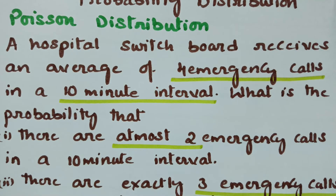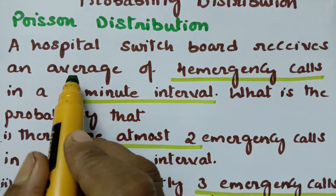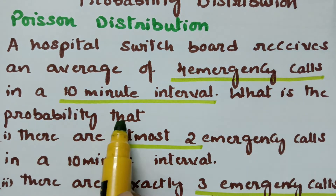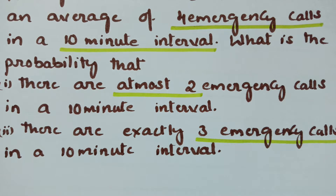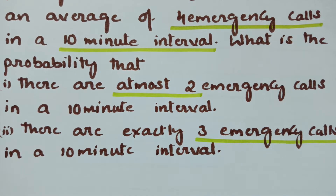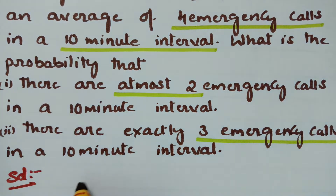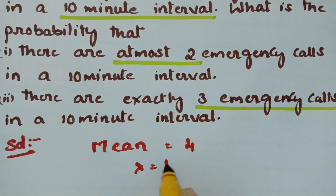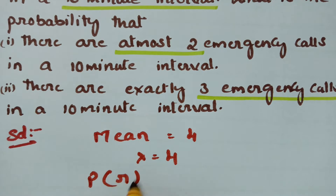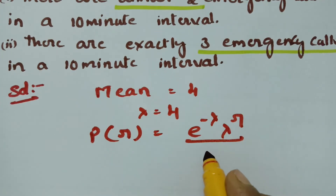A hospital switchboard receives an average of four emergency calls in a 10-minute interval. Since the average is given, mean lambda is equal to four. According to the Poisson distribution, P(r) = e^(-λ) × λ^r / r!.